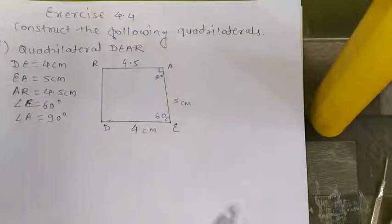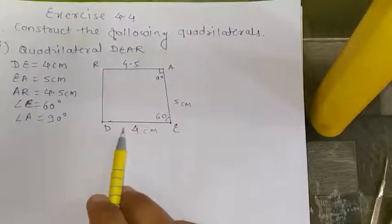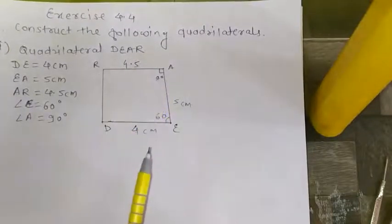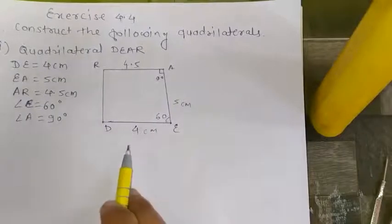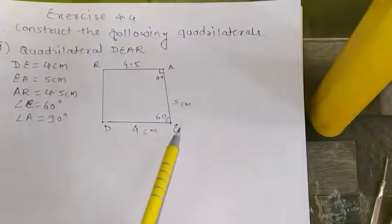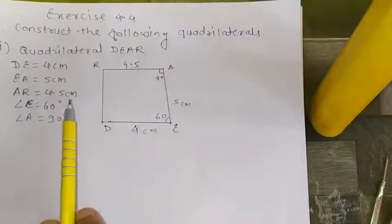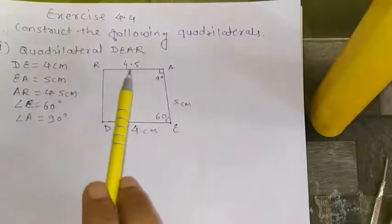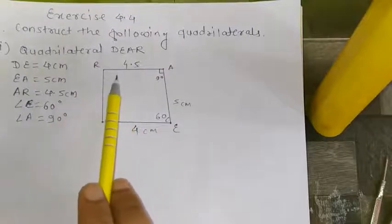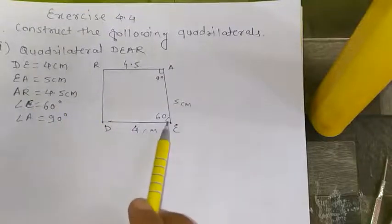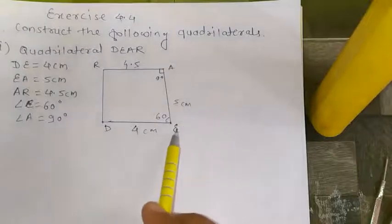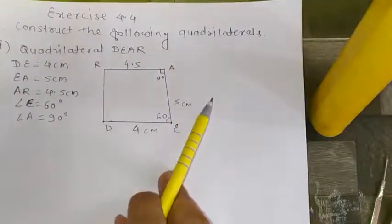I have already done the rough sketch in advance. The quadrilateral is DEAR. DE is given 4 cm, EA is given 5 cm, RA is given 4.5 cm. Two angles have been given: angle E is 60° and angle A is 90°.